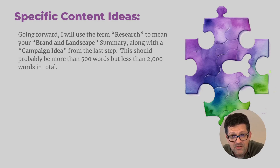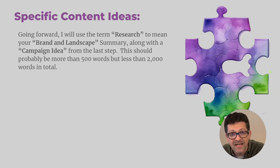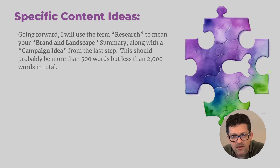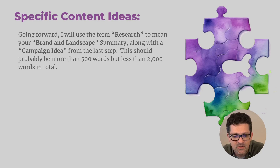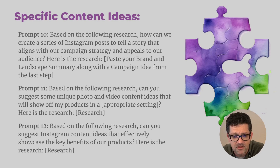Going forward, I'm going to use the term 'research' to mean both your brand and landscape summary, along with whatever campaign idea you want to focus on. You should have generated a bunch of ideas on overarching campaigns and strategies — pick one to focus on for the rest of this. That combined research should be somewhere around 500 to 2,000 words. It's going to be powerful stuff. It's a way of quickly showing the AI who you are and what you're all about, so it can help you in a customized way rather than just getting generic results.